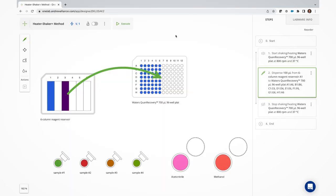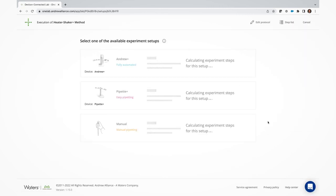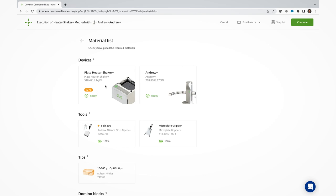Once your protocol is built, click on Execute and OneLab will calculate the best configuration for your method based on the available devices and pipettes, while suggesting different execution options. Choose the one that's most relevant to your current process between a manual run, a guided run with the addition of connected pipettes, or an automated run, and you're good to go.